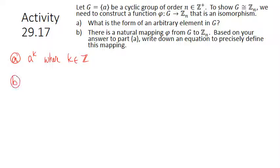Part B: there is a natural mapping phi from G to Zn. Since all elements of G look like A to the K where K is some integer power, the mapping that makes sense is phi of A to the K equals the congruence class of K. That's the only thing that really distinguishes the elements from each other — what that power is.